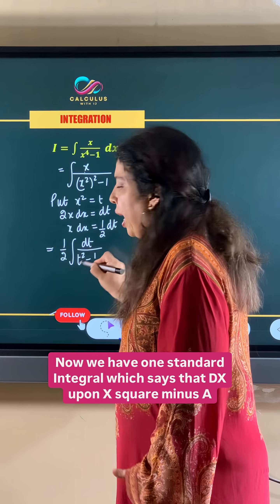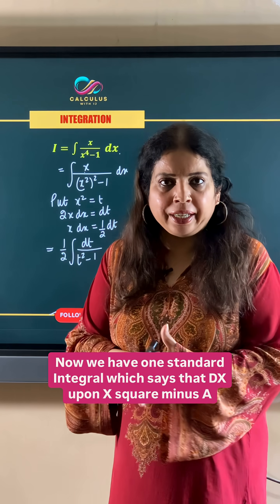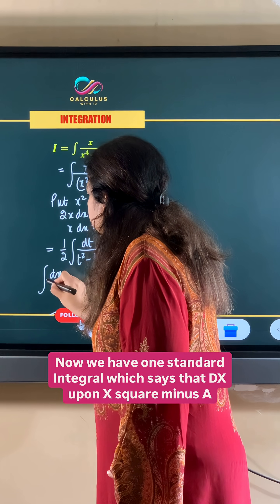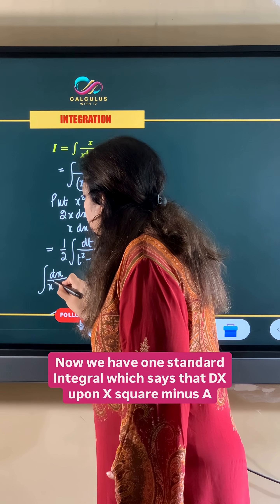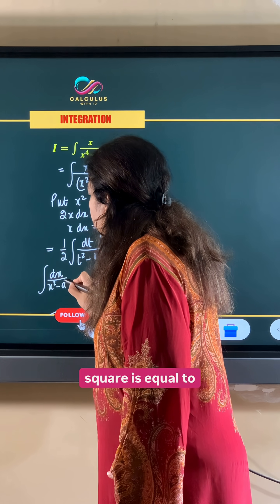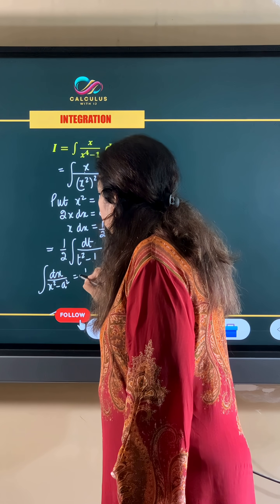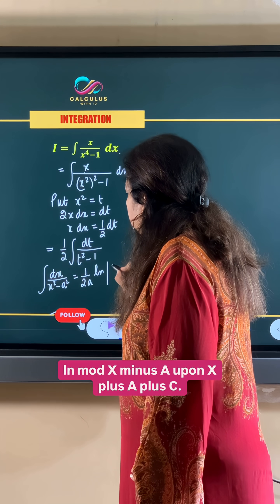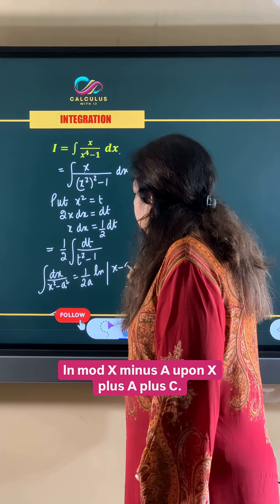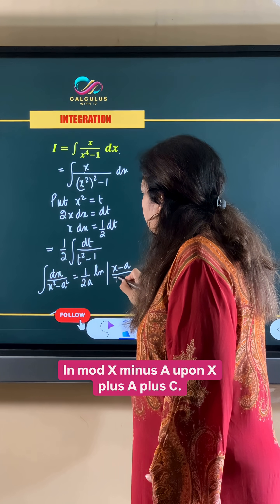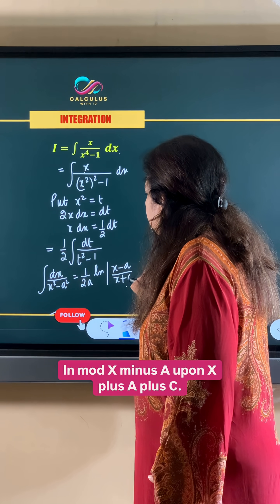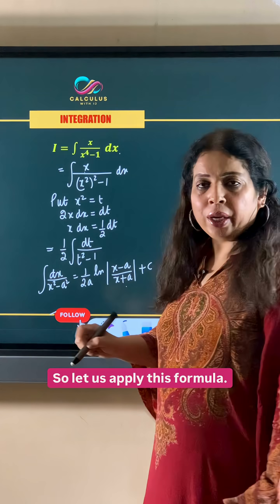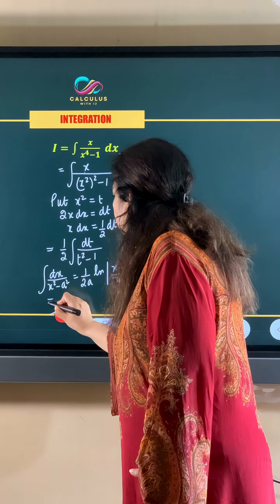Now we have a standard integral which states that the integral of dx upon x square minus a square is equal to 1 upon 2a times ln mod of x minus a upon x plus a, plus c. Let us apply this formula.